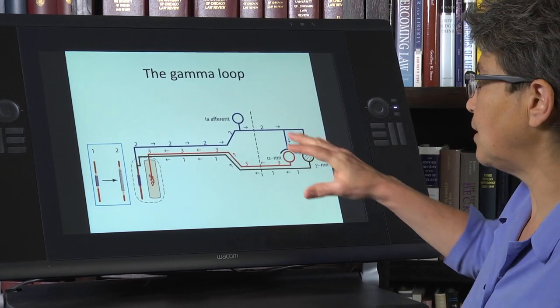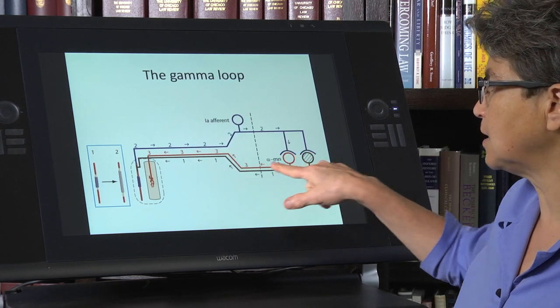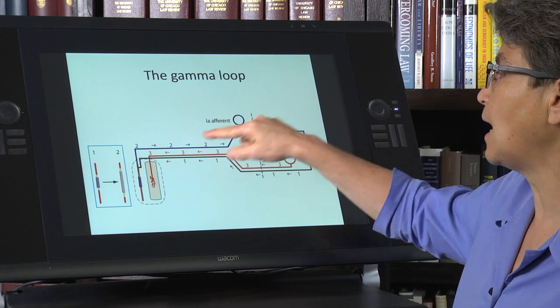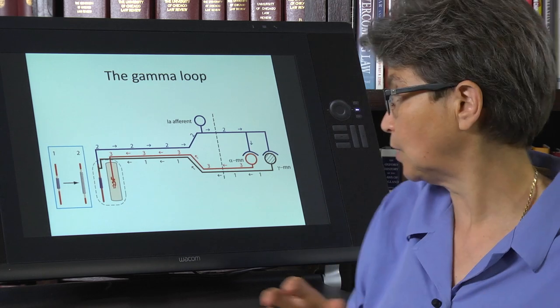The other thing that this drawing shows you is that all of these axons, the axons coming from the alpha and gamma motor neurons, and the axons of the 1A afferents, they're all traveling together in the peripheral nerve.